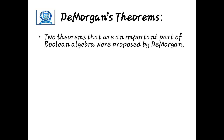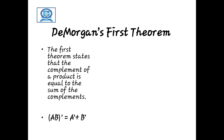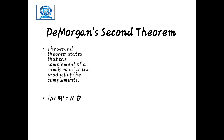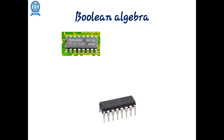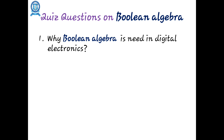The next is De Morgan's theorem. According to this theorem: (ab)-bar equals a-dash plus b-dash, and (a plus b)-bar equals a-dash dot b-dash. These two are De Morgan's theorems. The first states that (ab)-bar equals a-dash plus b-dash, and the second states that (a plus b)-bar equals a-dash dot b-dash.